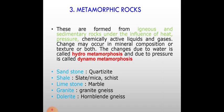Metamorphic rocks are formed from igneous and sedimentary rocks under the influence of heat, pressure, and chemically active liquids and gases. Change may occur in mineral composition or texture or both. The changes due to water are called hydrometamorphism and due to pressure are called dynamometamorphism. Examples: sandstone becomes quartzite; shale becomes slate or mica schist; limestone becomes marble; granite becomes granite gneiss; dolerite becomes hornblende gneiss.